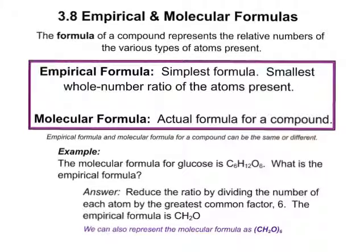Hello everyone. Today we're talking about empirical and molecular formulas. You already know that a chemical formula of a compound represents the relative numbers of the various types of atoms present. For example, if we have CO2, we know that this 2 represents the number of oxygen atoms present in this compound.